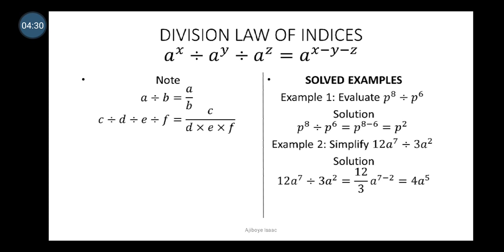Example 1: Evaluate p raised to power 8 divided by p raised to power 6. The law says we pick only one base p and subtract the powers: 8 minus 6. Therefore, p raised to power 8 divided by p raised to power 6 equals p raised to power 8 minus 6, which equals p raised to power 2.